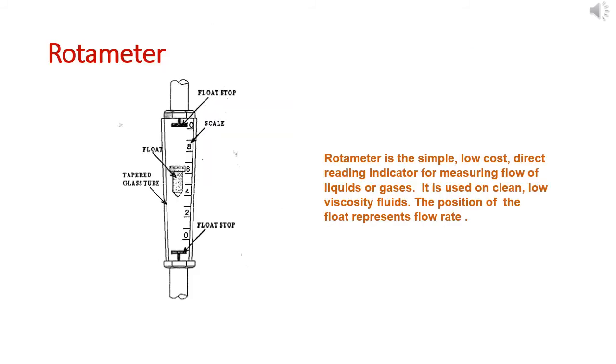Another type of flow meter is the rotameter. A rotameter is a simple, low-cost, direct-reading indicator for measuring flow of liquids and gases. It is used for clean, low-viscosity fluids. The position of the float represents the flow rate.